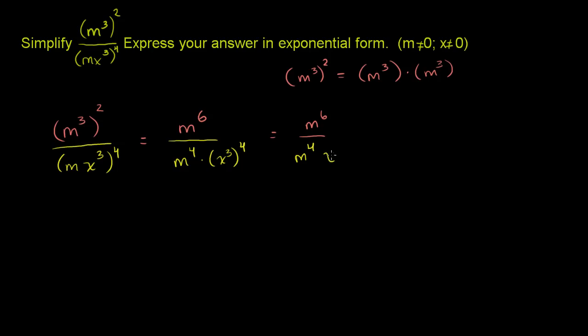So times x to the twelfth. Now, we have an m to the sixth in the numerator, an m to the fourth in the denominator. You could view this as the same thing as m to the sixth times m to the negative 4, either way. But we know, or hopefully we know, that this right here, this right here, that piece right there, can be simplified as m to the sixth minus 4 power.